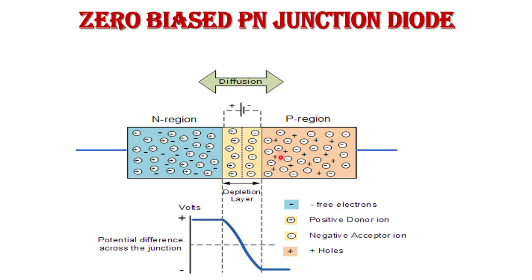Due to the concentration gradient, N-type electrons move toward the P-side and diffuse there. A number of immobile ions are created near the junction — positive immobile ions on the N side and negative immobile ions on the P side — and the depletion region forms. This depletion region has a potential barrier which prevents further flow of charge carriers from N side to P side. So in zero bias, there is a depletion region and no current flows.